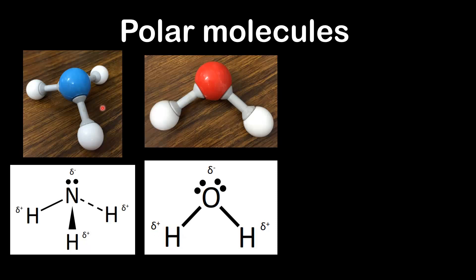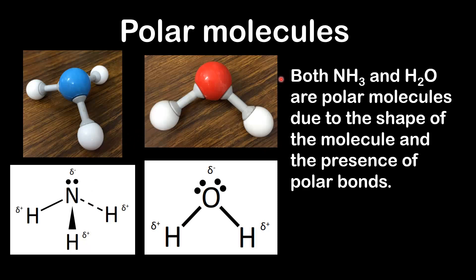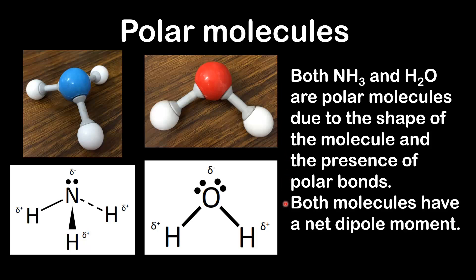The second factor that makes these polar molecules is their shape. NH3 has a trigonal pyramidal shape and water has a bent shape. Both molecules are unsymmetrical, and that together with the presence of polar bonds makes them polar. Both NH3 and H2O have a net dipole moment — the bond polarities do not cancel out. That's all from this video; don't forget to check the video description for a link to a practice worksheet.